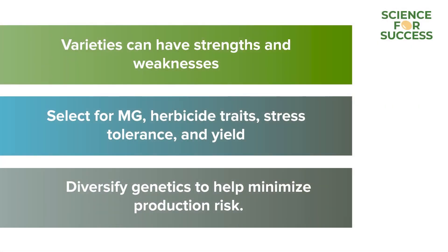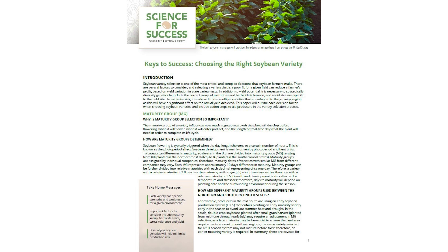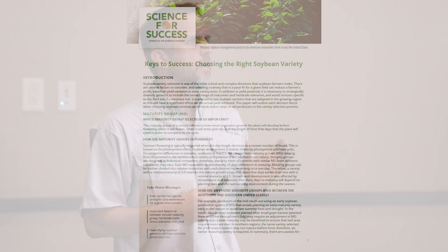In summary, when selecting a variety, it's important to know that varieties have strengths and weaknesses — make sure they align with your production system. We talked about maturity group, herbicide technology, stress tolerance, and yield. Also pick varieties with different genetic backgrounds to diversify your genetics and minimize risk on your farm. A fact sheet with all this information is available at the website shown, written by the Science for Success group.